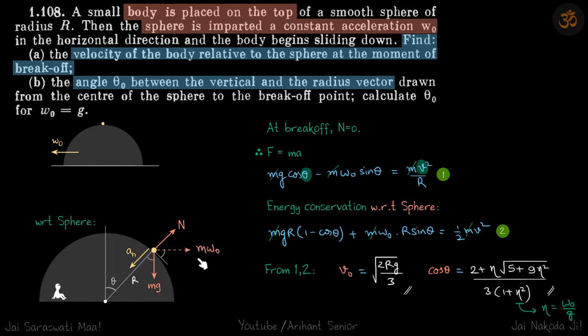It has fallen down by distance r minus r cos theta, so mgr into one minus cos theta. That is the work done by gravity.